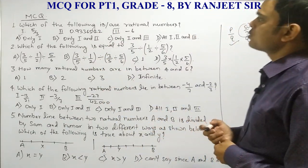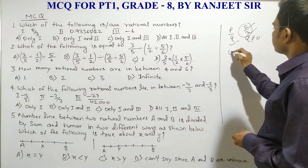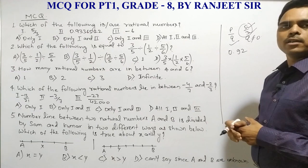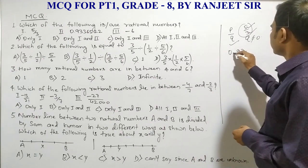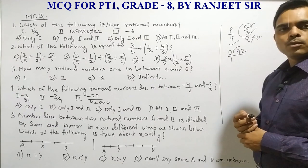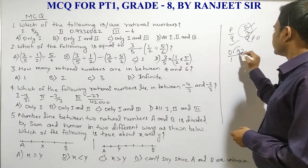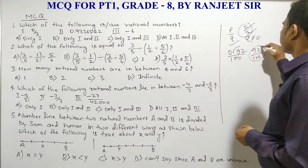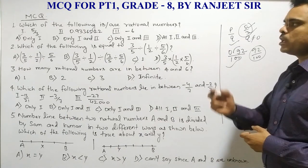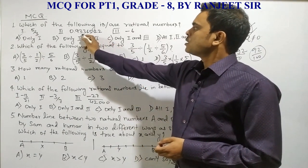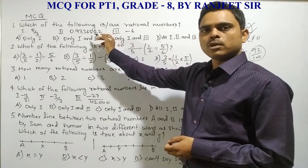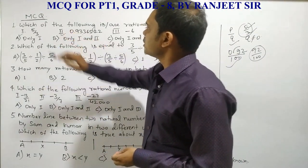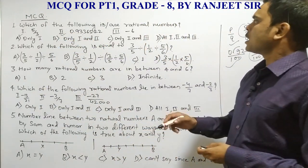Next, is 0.92 a rational number? If I take the number 0.92 and write it in the form P/Q, we remove the decimal and put two zeros in the denominator — that gives us 92/100. In the same way, 0.9336522 can also be easily converted into the form P/Q, and that is why this is also a rational number.